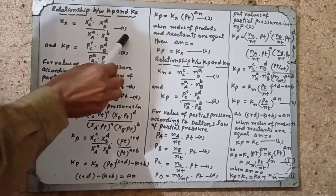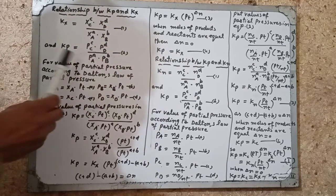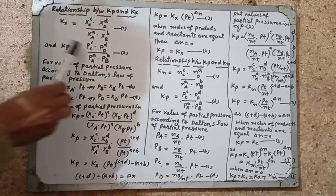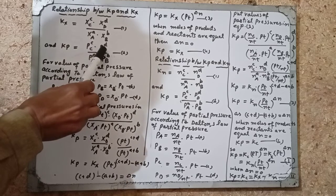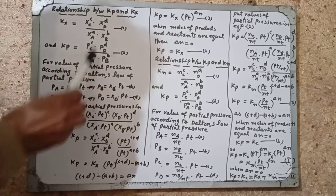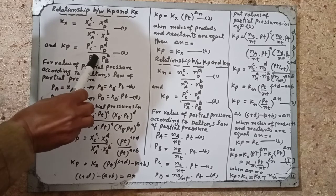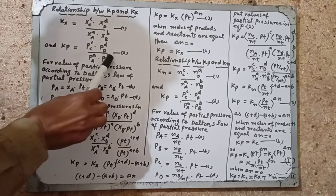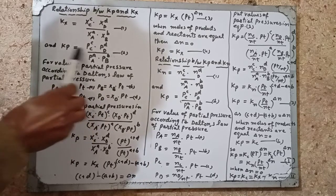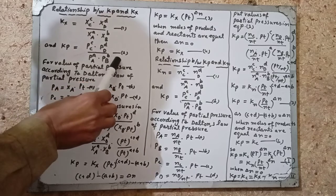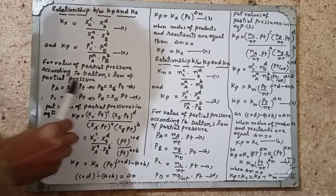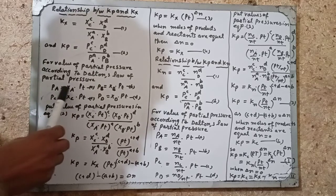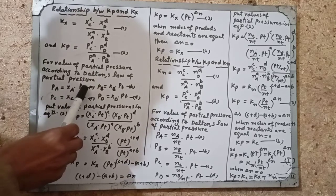Mole fraction of products divided by mole fraction of reactants is Kx. Kp equals partial pressure of product C raised to c, and partial pressure of product D raised to d, divided by partial pressure of reactant A raised to a and partial pressure of reactant B raised to b. For the value of partial pressure, according to Dalton's law: PA = XA × PT.